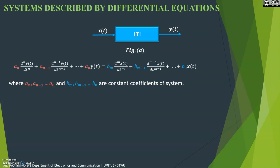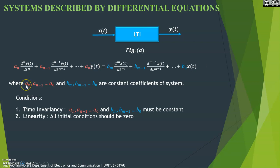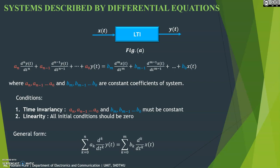This equation will be considered a representation of a continuous-time domain LTI system only if it satisfies two conditions. First, the coefficients a_N, a_(N-1), ..., a_0 and b_M, b_(M-1), ..., b_0 must be constant, so as to follow time invariance. Second, to follow linearity, all initial conditions of this equation should be zero. The generalized form is: summation of a_k times the kth derivative of y(t) for k from 0 to N, equals summation of b_k times the kth derivative of x(t) for k from 0 to M.